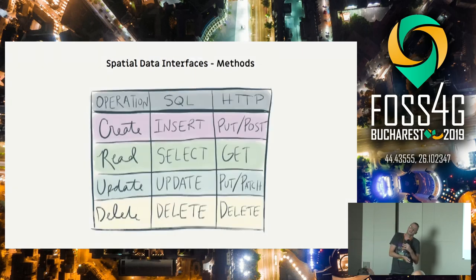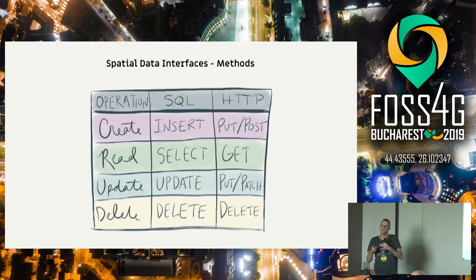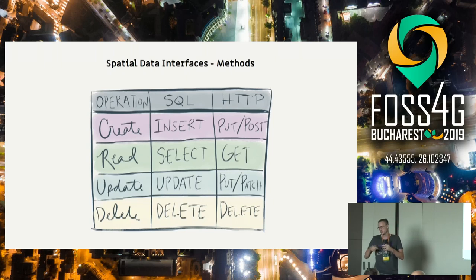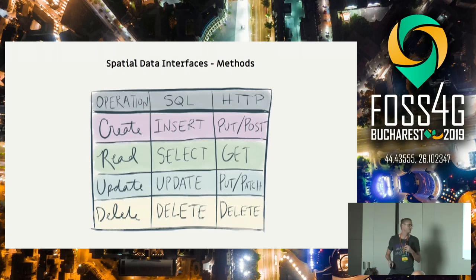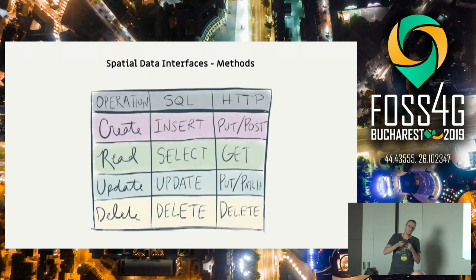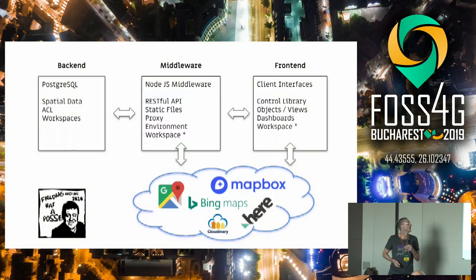The methods of the spatial data interfaces are how we interact with the data. We have the table or the map to look at it, and by adding interaction — for example, we want to digitize on a map, or open a location view and edit a field. Those methods are basically the CRUD methods: create, read, update, delete. And that's really great for the cloud, for a RESTful API, because we have PUT, GET, DELETE — they translate well to SQL, because all our data is stored in a relational database: PostgreSQL.